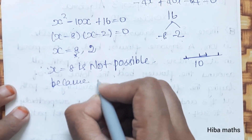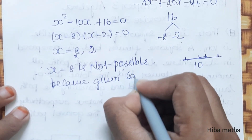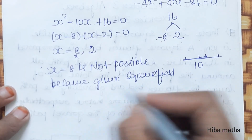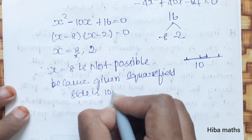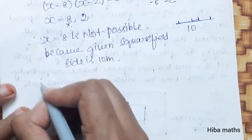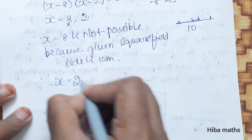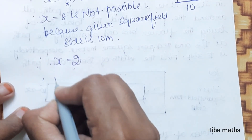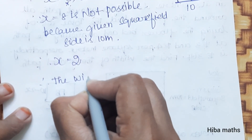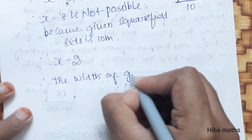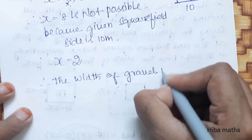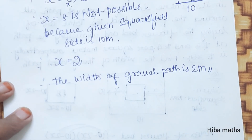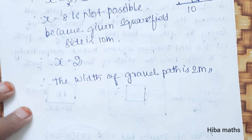x equals 8 is not possible because the given square field side is 10 meters — x cannot be 8. Therefore, x equals 2. The width of the gravel path is 2 meters. Thank you so much for watching.